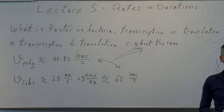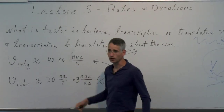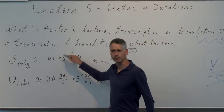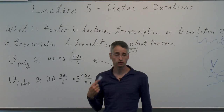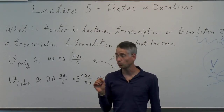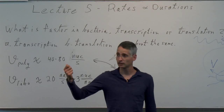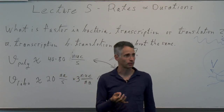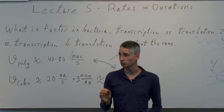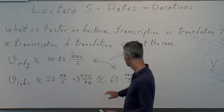These numbers aren't pulled from thin air — you can find them in the literature or databases — but it's very useful to remember they're somewhere between 10 and 100 per second. It's interesting to wonder why it's not 10 or 100 times faster, since that would have great implications for the ability of cells to grow. The exercise this week relates to the rate of the ribosome.